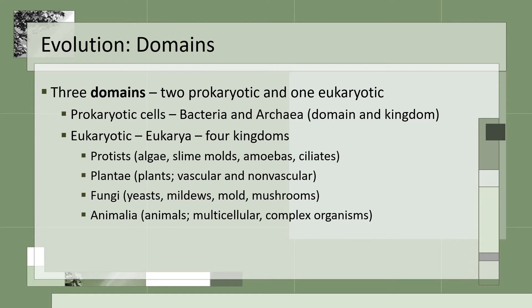These three domains are bacteria, archaea, and eukarya. The first two only have prokaryotic cells, which are the cells without a nucleus. The domain is also the kingdom, meaning the second level of hierarchy. Eukarya has all the eukaryotic cells, or cells with a nucleus. Remember: pro-no, eu-nu. Eukarya has four kingdoms: the protists, which are the slimes and algae-type organisms; plantae, which are all the plants; fungi, which includes yeast, molds, and mushrooms; and animalia, which of course is all animals, including humans.